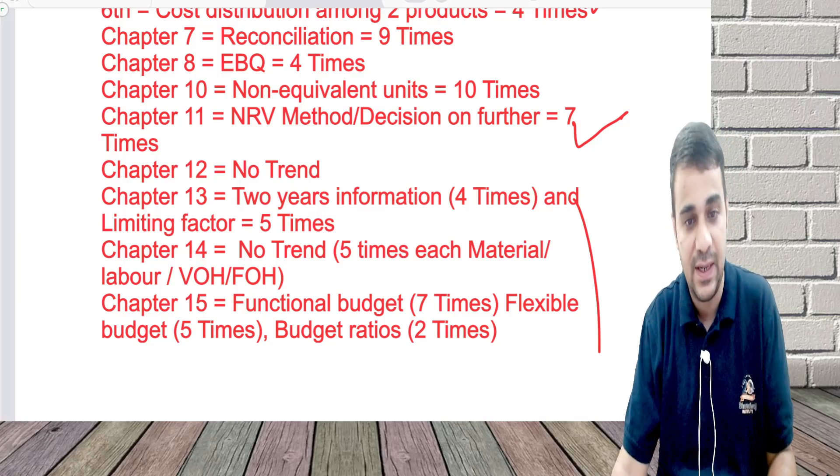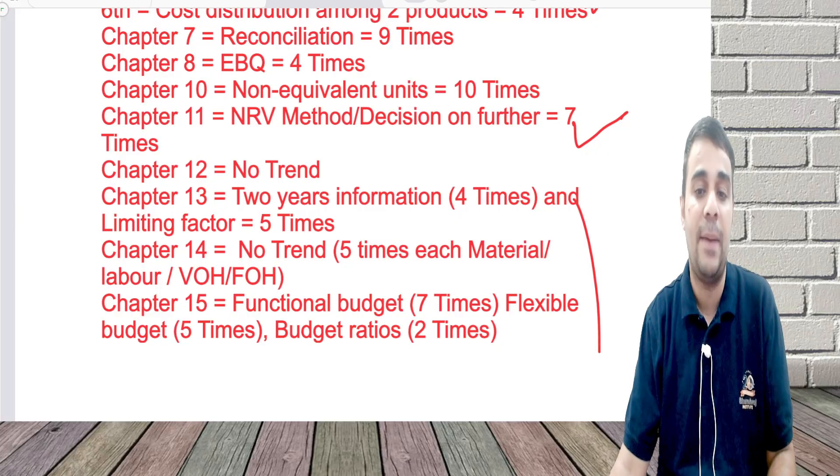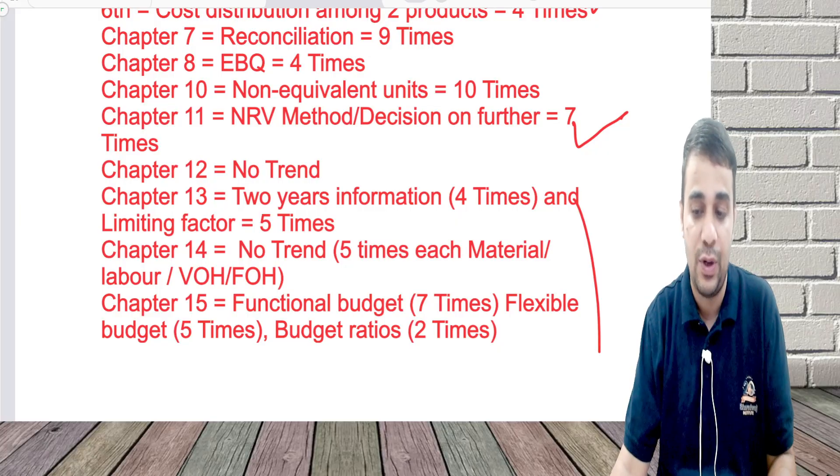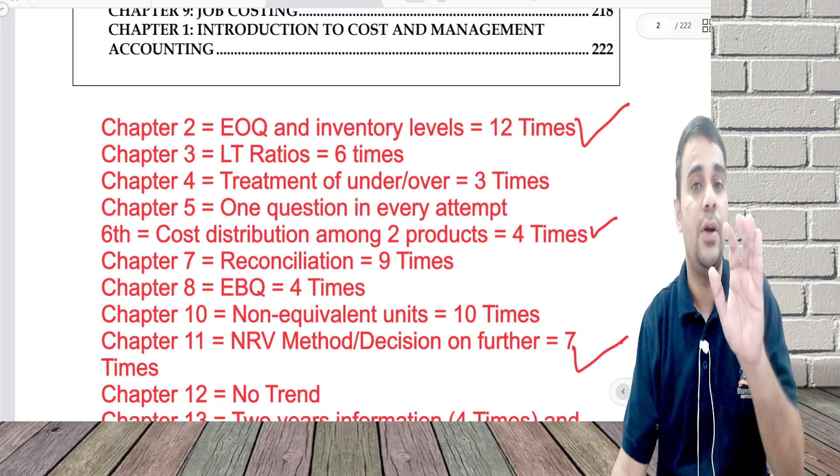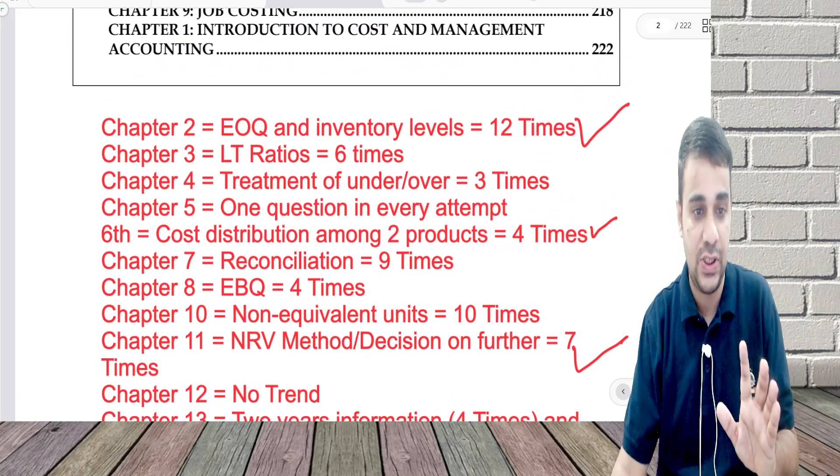Chapter 15: functional budgets — that is production budget and sales budget — have come seven times in the exam. Flexible budget has come five times and budget ratios two times.